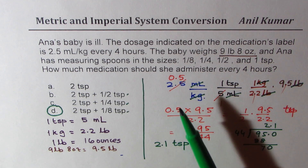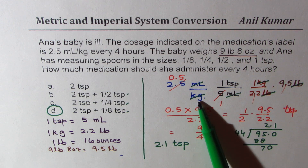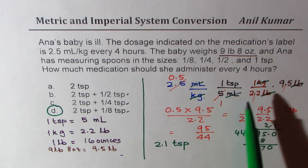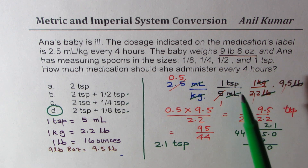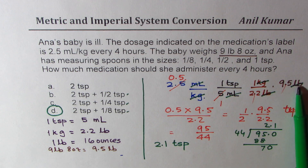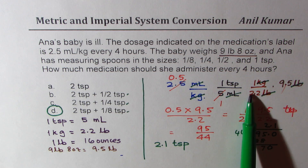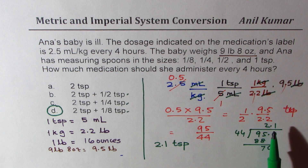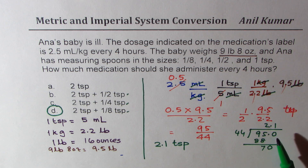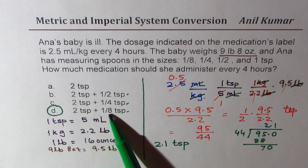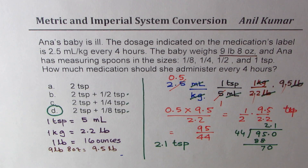Let's go through the calculations once again. We have 2.5 milliliters per kg. We know 1 teaspoon is 5 milliliters and 1 kg is 2.2 pounds, and the baby weighs 9.5 pounds. Dividing 2.5 by 5 gives 2 times; 2 times 2.2 is 4.4; and 9.5 over 4.4 gives 95 divided by 44, which is approximately 2.1 — matching 2 teaspoons and 1/8 of a teaspoon.